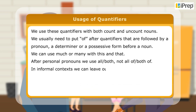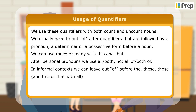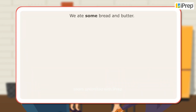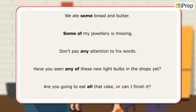We can leave out 'of' before 'the', 'these', 'those', 'this', or 'that', and with 'all', 'my', 'her', 'his', etc., but not before 'them', 'you', or 'us' and 'it' with 'all'. Let us look at a few examples: we ate some bread and butter.